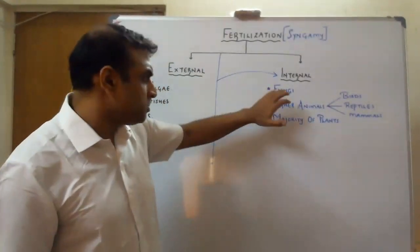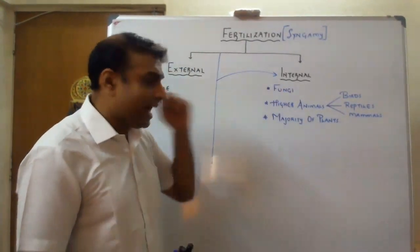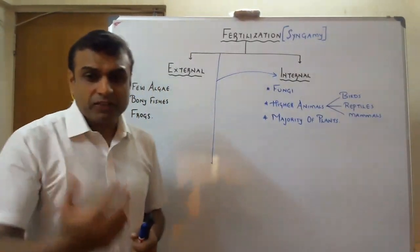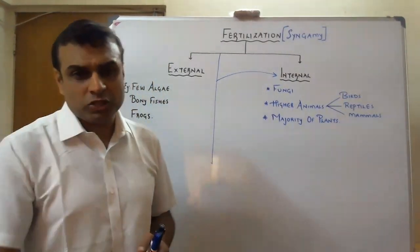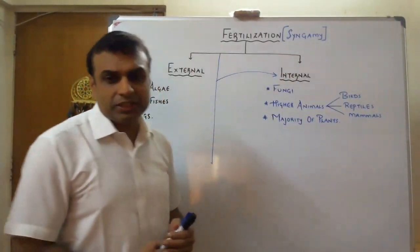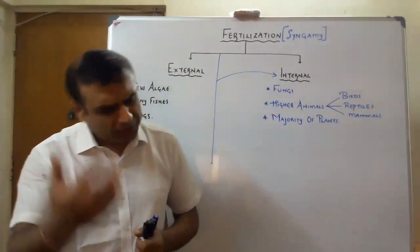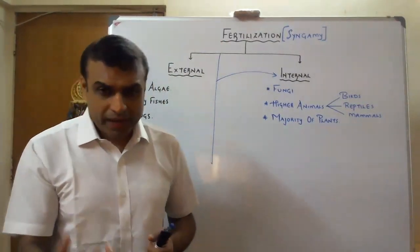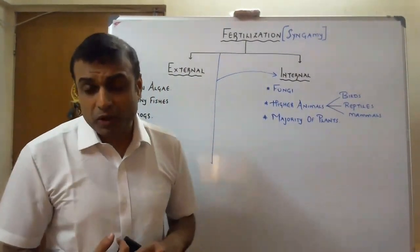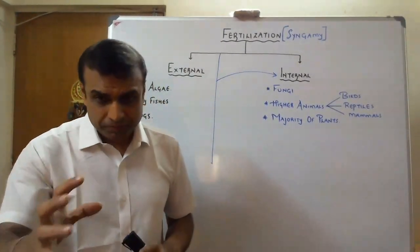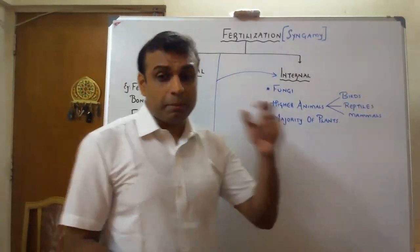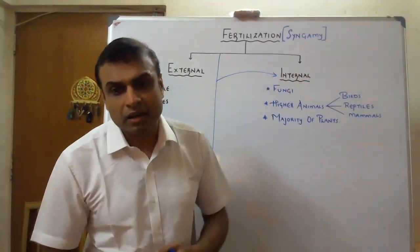Internal fertilization is observed in fungi, higher animals like birds, reptiles, and mammals, and in the majority of plants. In angiosperms, we have siphonogamy. In bryophyta, pteridophyta, gymnosperms, and angiosperms, fertilization is internal. The advantages are that the zygote, embryo, and young ones formed are all protected, and initial nutrition for the young one is provided by the female.